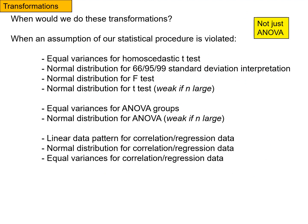So when would we do these transformations? In general, when an assumption of our statistical procedure is violated. So for example, equal variances for the homoscedastic t-test. If we really wanted to do a homoscedastic t-test, but our f-test showed that the variances were different, we could transform the data to get data sets that have equal variances and then do a homoscedastic t-test.